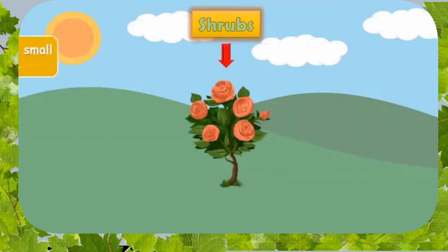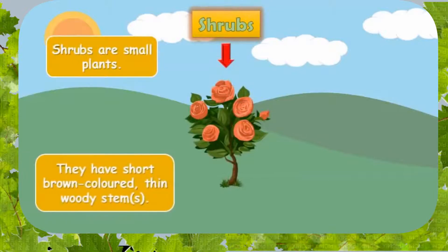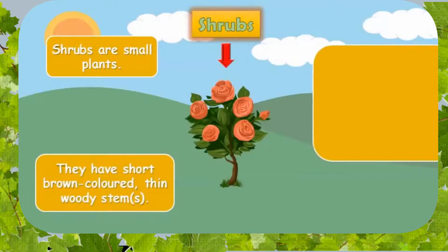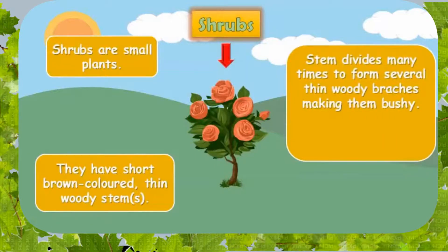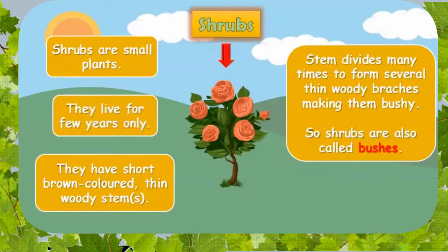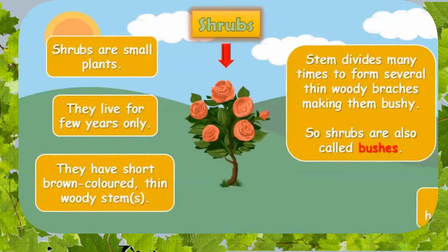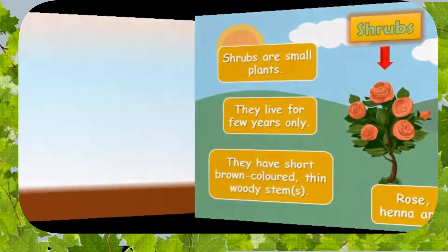Shrubs are small plants. An example of a shrub is the rose flower. They have short, thick wooden stems and some of them make up bushes. They live only a few years.